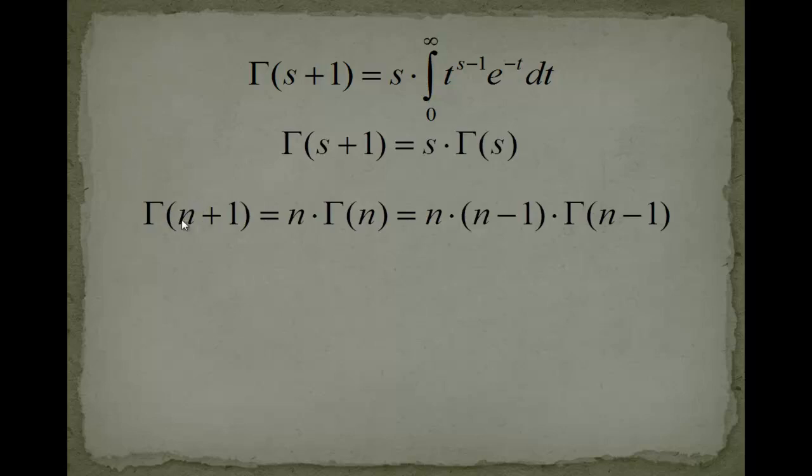And actually, if you do that, if you just plug in for s an integer number, use the functional equation, and use it iteratively again and again and again, then you see you have n multiplied with n minus 1, multiplied with n minus 2, and so forth. So actually, you end up having n factorial.